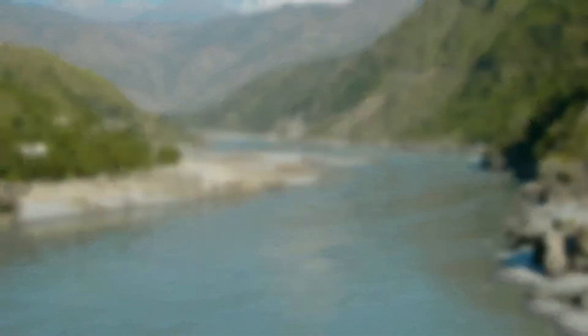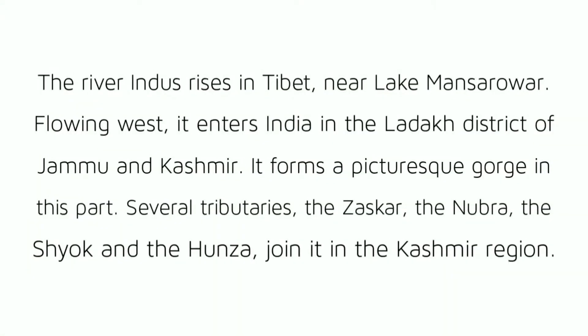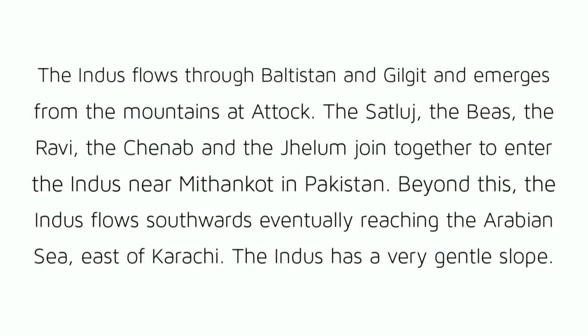The Indus River System: The river Indus rises in Tibet near Lake Mansarowar. Flowing west, it enters India in the Ladakh district of Jammu and Kashmir, where it forms a picturesque gorge. Several tributaries — the Zaskar, the Nubra, the Shayok and the Hunza — join it in the Kashmir region. The Indus flows through Baltistan and Gilgit and emerges from the mountains at Attock. The Sutlej, the Beas, the Ravi, the Chenab and the Jhelum join together to enter the Indus near Mithankat in Pakistan. Beyond this, the Indus flows southwards, eventually reaching the Arabian Sea east of Karachi.